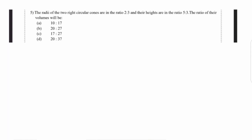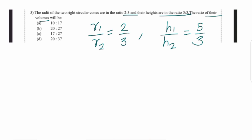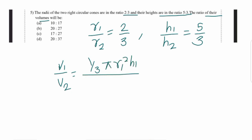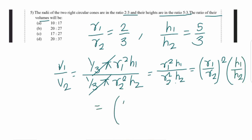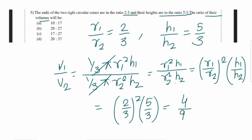Question number 5: the radii of two right circular cones are in the ratio 2:3 and the heights are in the ratio 5:3. Find the ratio of their volumes. V₁/V₂ = (r₁/r₂)² × (h₁/h₂) = (2/3)² × (5/3) = 4/9 × 5/3 = 20/27. So option B, 20:27, is the correct answer.